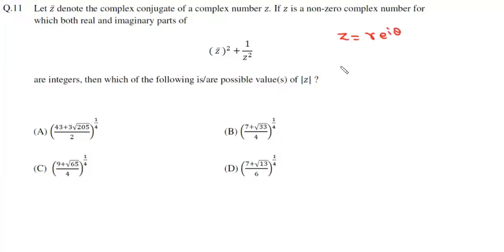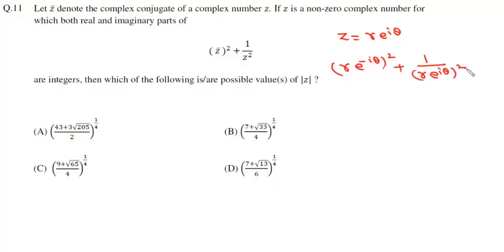So Z̄ = R·e^(−iθ), so Z̄² + 1/Z² equals R²·e^(−2iθ) + 1/(R·e^(iθ))², which simplifies to (R² + 1/R²)·e^(−2iθ).